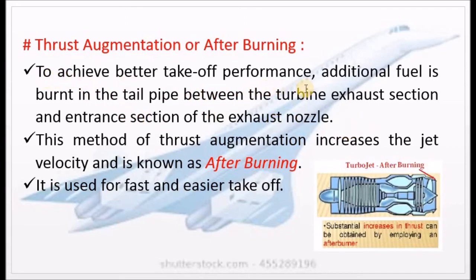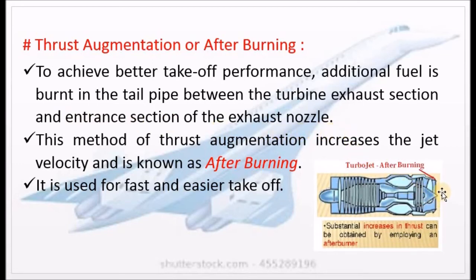To achieve better take-off performance, additional fuel is burnt in the tail pipe. The combustion chamber will supply the fuel to the tail pipe, which is between the turbine and exhaust sections — the turbine exhaust section and the entrance section of the exhaust nozzle. In between, fuel is applied.